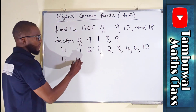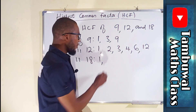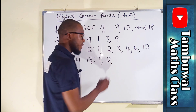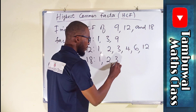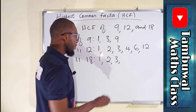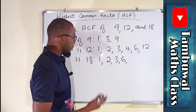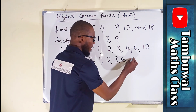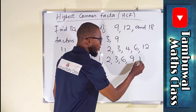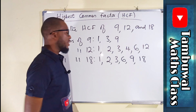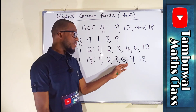For eighteen: one can go, two can go nine times, three can go six times. Four cannot, five cannot, six can go three times. Seven cannot, eight cannot, nine can go two times — and nine is half of eighteen. Then the next number is going to be the number itself. So the factors of eighteen are one, two, three, six, nine, and eighteen.